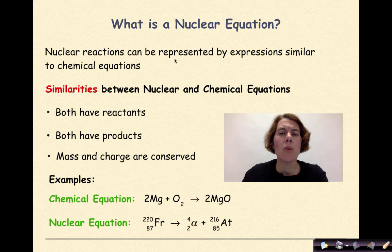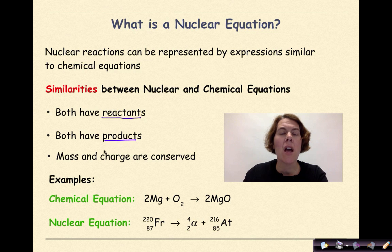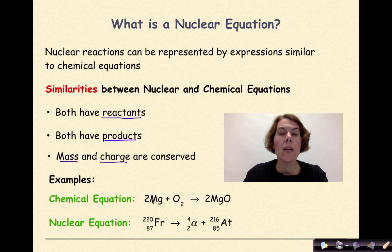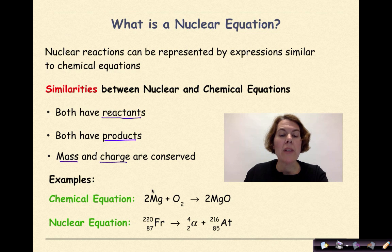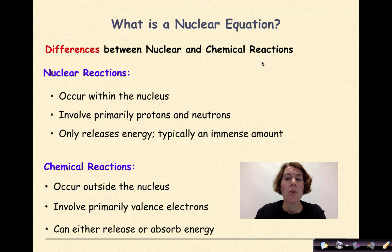Nuclear reactions can be represented by expressions very similar to chemical equations. The similarities between nuclear and chemical equations: they're both going to have reactants and they're both going to have products. In both nuclear and chemical equations, mass and charge are both conserved. For example, a chemical equation like magnesium plus diatomic oxygen produces magnesium oxide; a nuclear equation: francium-220 decomposes into an alpha particle and astatine-216 — we see reactants, products, and that things are balanced.